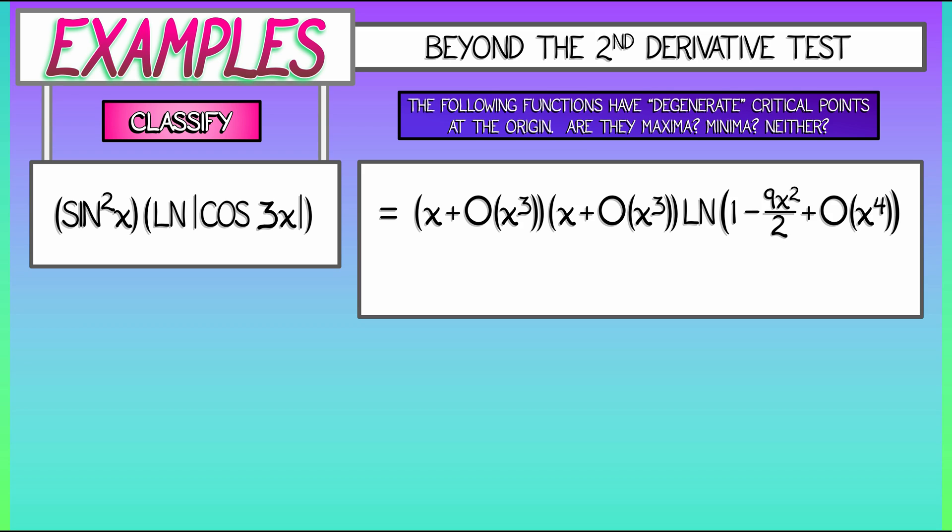Taking the leading order terms of these three factors gives us what? I have a sine of x that has leading order term x, but I have another one of those, another leading order term of x. And then, when I use the Taylor series for log of 1 plus something, the leading order term that I'm going to get is minus 9x squared over 2. Multiplying these leading order terms together gives me minus 9 halves x to the fourth. Then I have the higher order terms, which you can check, all fit into a big O of x to the sixth.